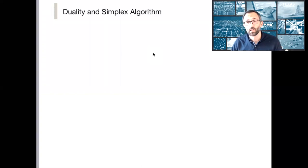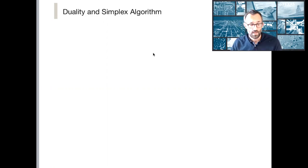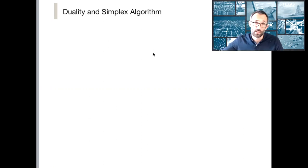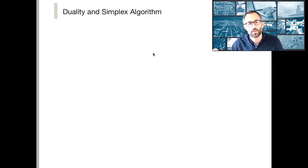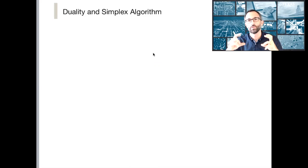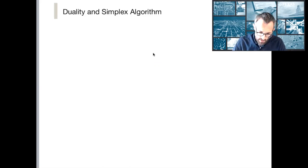We have been talking about the simplex algorithm and duality. One of the things we've seen is how when we run the simplex algorithm on the primal, we reveal properties of the dual. But of course we could also just take the dual and run the simplex algorithm on that. We're going to talk about something in between — how, without changing our tableau, we can use that same simplex tableau to run dual updates.